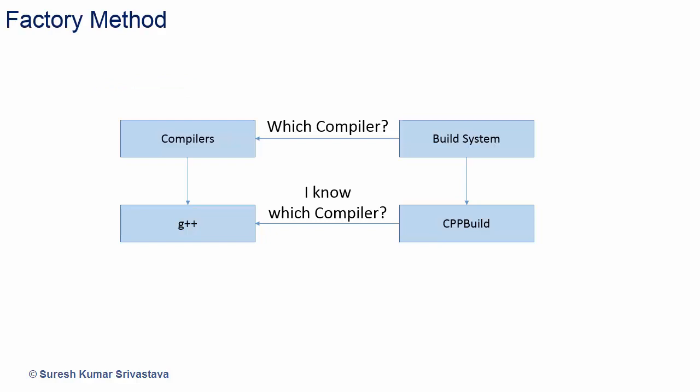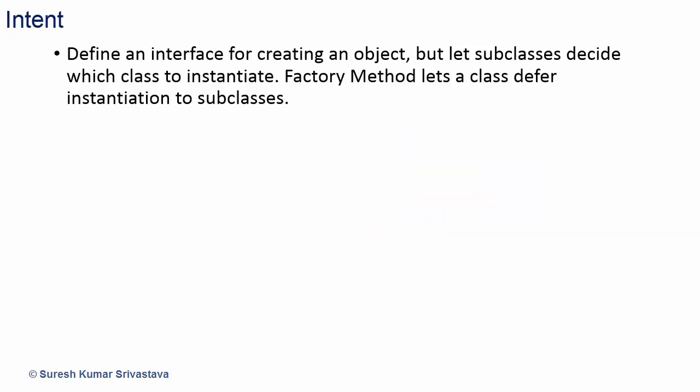In this lecture, we will discuss the factory method design pattern. Factory method pattern uses a subclass to create an object of a derived class of another class which is not known. The intent is to define an interface for creating an object, but let subclasses decide which class to instantiate. Factory method lets a class defer instantiations to subclasses.